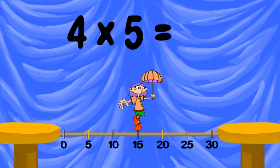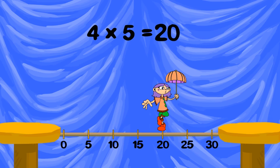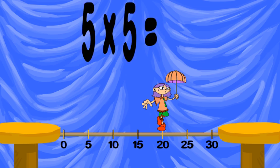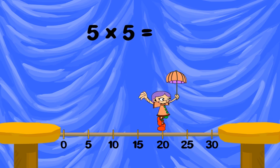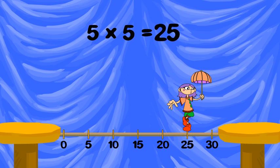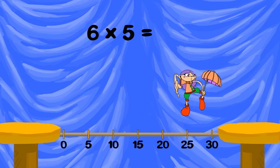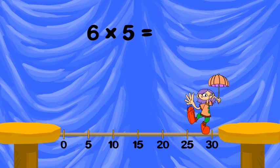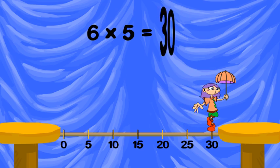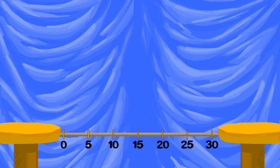Five groups of five is twenty-five. Six groups of five is thirty. You're on your way to knowing your five times facts!